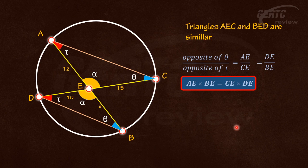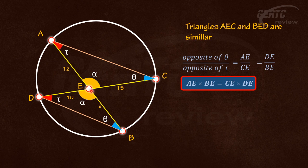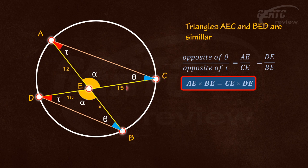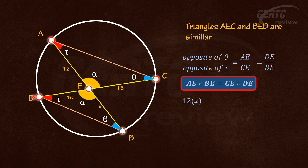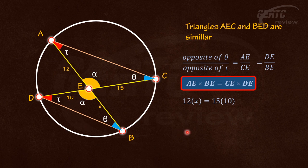Therefore, if two chords of a circle intersect, the product of the segments to the point of intersection are equal. Meaning AE times BE equals CE times DE. Let's substitute the values. AE is 12 and BE is X, equals 15 times 10. So X equals 12.5 units.